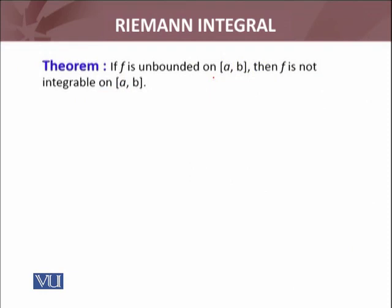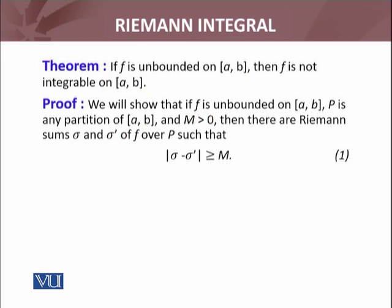If f is unbounded on the closed interval [a,b], then f is not integrable on [a,b]. I have already discussed the idea. We will show that if f is unbounded on [a,b], then for any partition P of [a,b] and m greater than 0, there are Riemann sums sigma and sigma prime such that the absolute value of their difference is always greater than or equal to m.